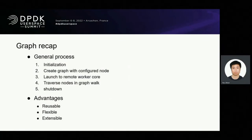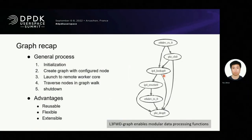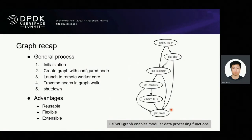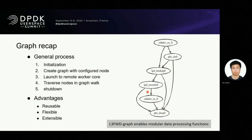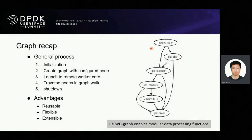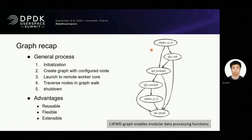Let's start from the basics. This diagram represents what a typical layer 3 forward looks like. We have several nodes decoupled from layer 3 forward: eth RX, packet classification, IP lookup, and IP rewrite. When finished initialization, it will create a graph with these configured nodes, then launch to Remote Worker. The first stage is pulling packets from network adapter, then the received packets typically traverse the processing graph nodes.